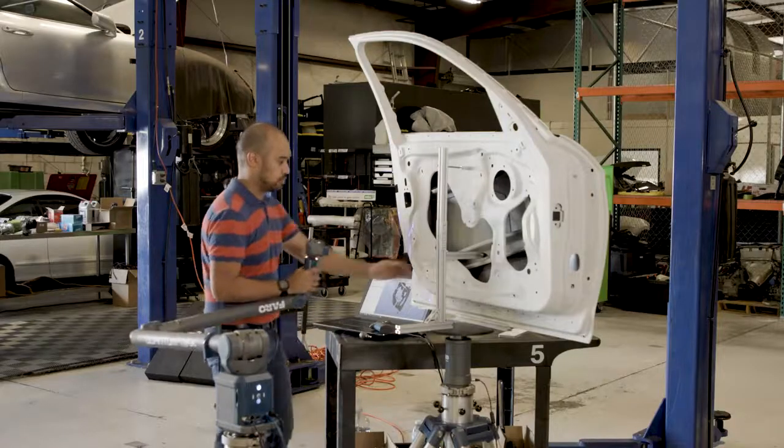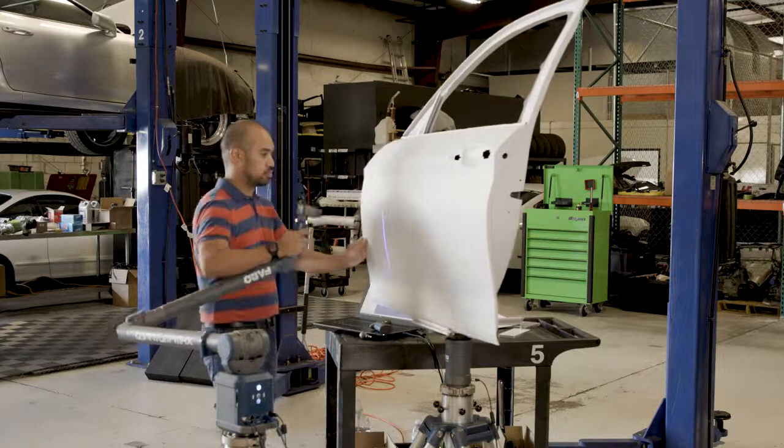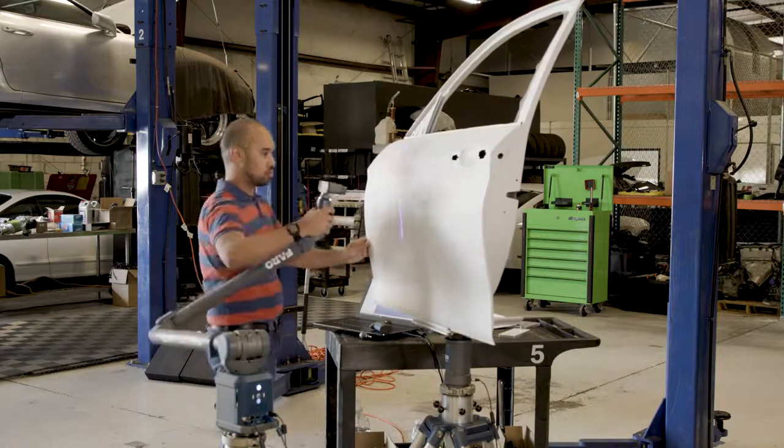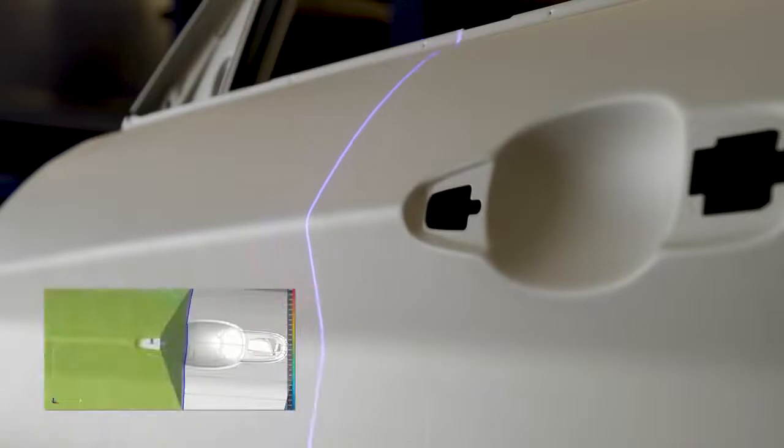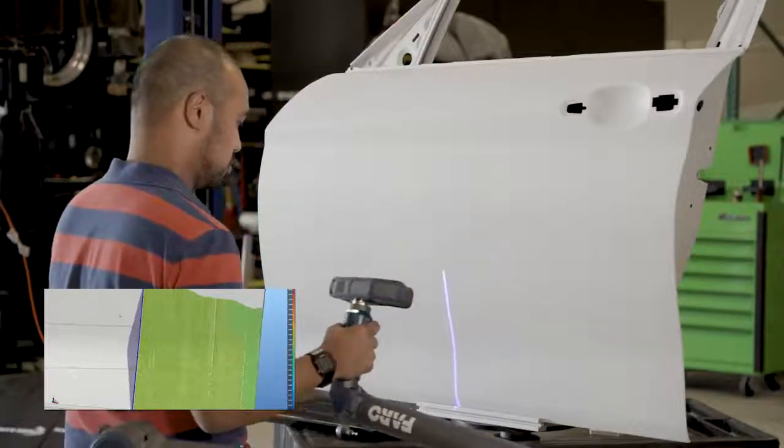For quickly scanning large parts or expansive surface areas, the XS LLP's extra-wide laser stripe delivers increased coverage per pass, collecting data in half the time for faster results and higher productivity.